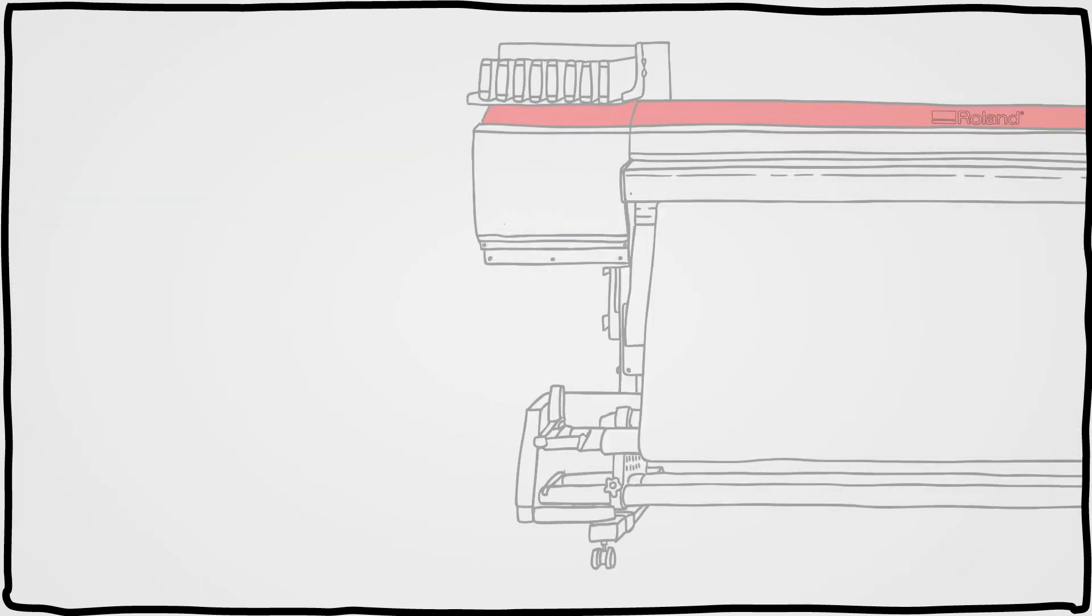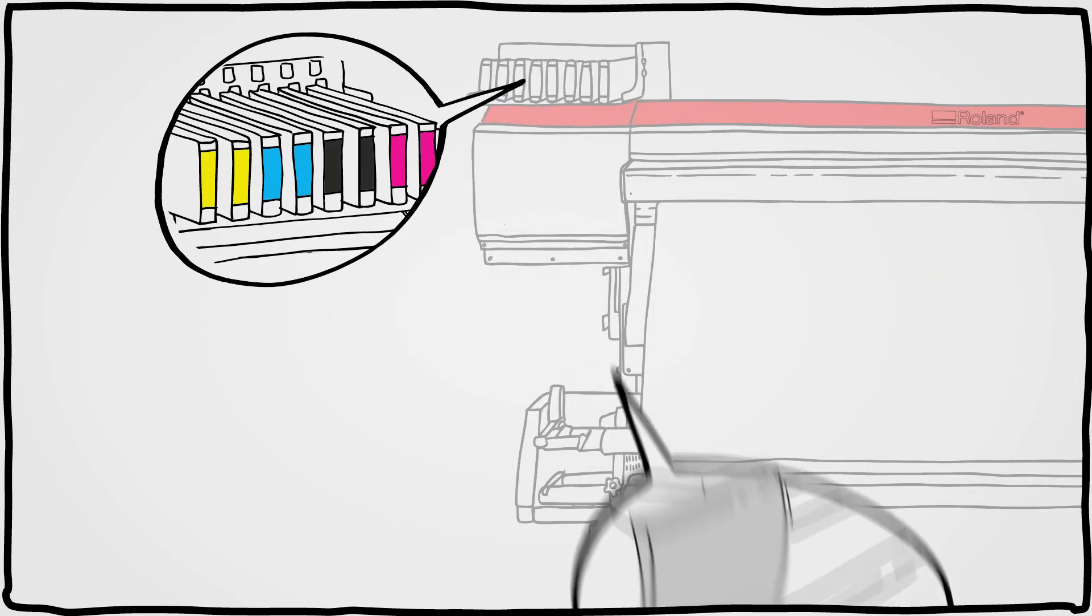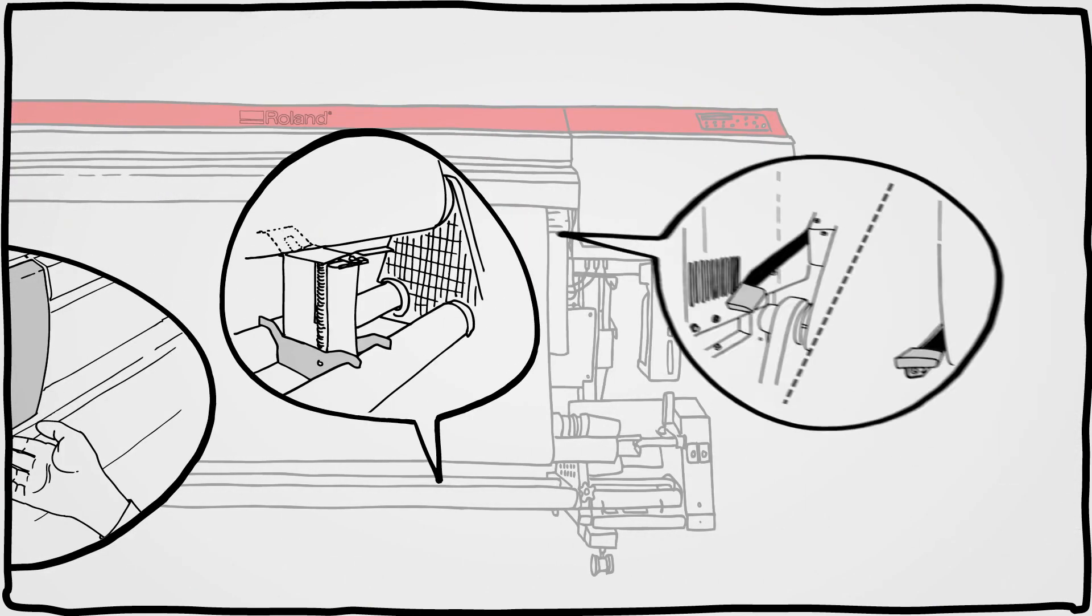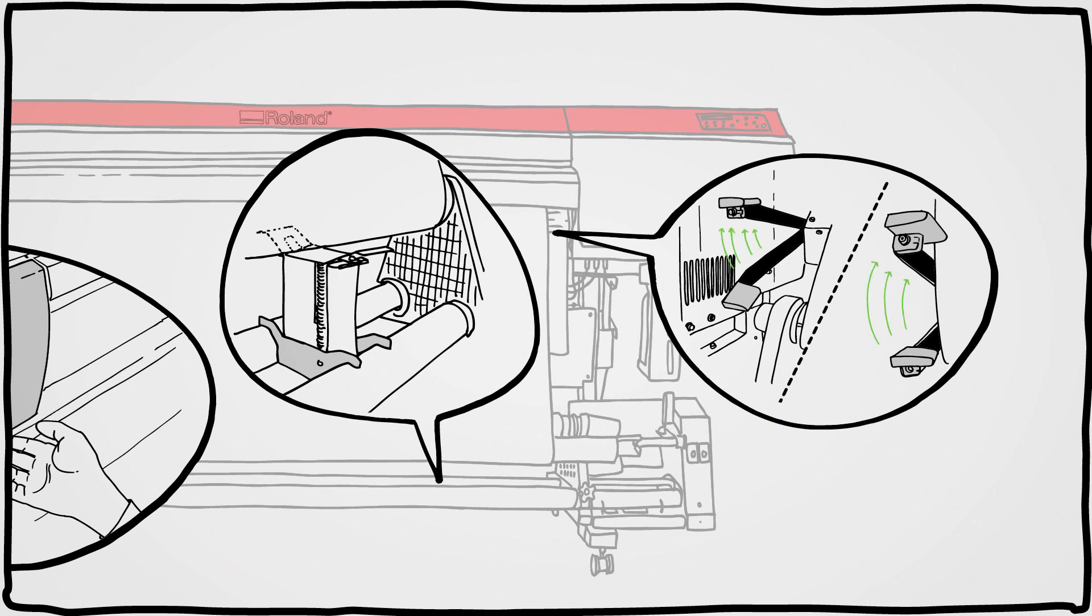When it comes to ease of use, the XF was built for productivity. Front-loading cartridges, a one-touch open and closed cover for easy cleaning, levers in front and in back to load your media. And if the media is heavy, media brackets make it easier to lift.